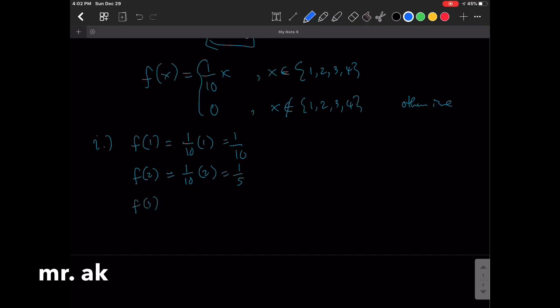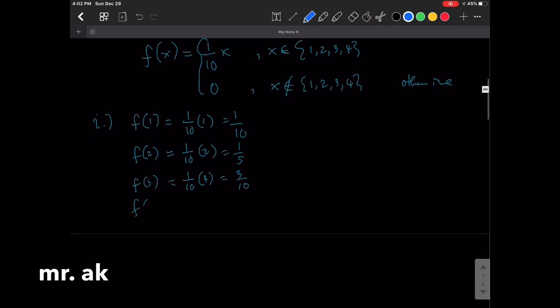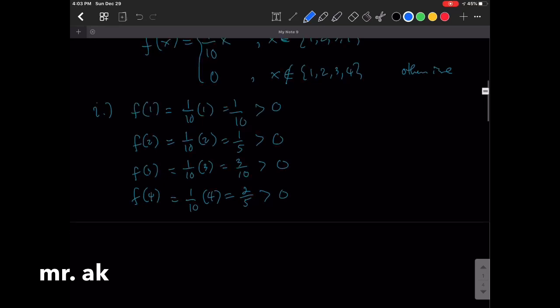f(3). f(3) is 1 over 10 times 3. That is 3 over 10. Still greater than 0. And lastly, we have f(4) equals 1 over 10 times 4 equals 2 over 5. That's still greater than 0. These numbers are all greater than 0.